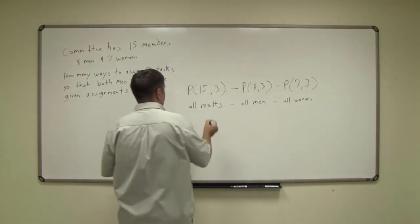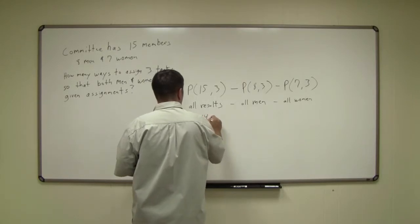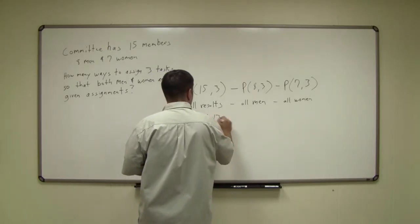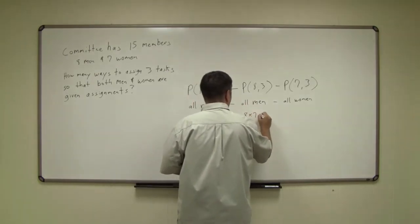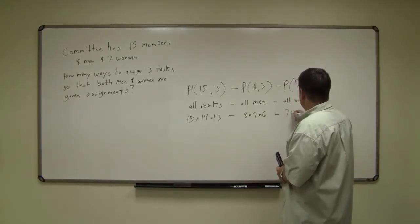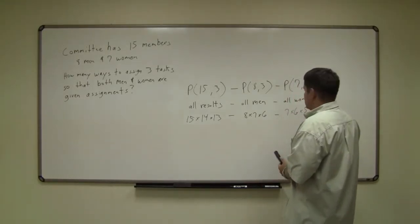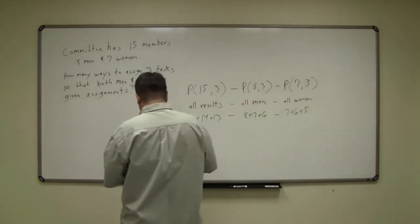So permutation 15 choose 3 is 15 times 14 times 13. Permutation 8 choose 3 is 8 times 7 times 6. Permutation 7 choose 3 is 7 times 6 times 5.